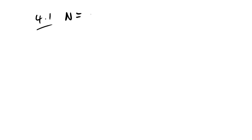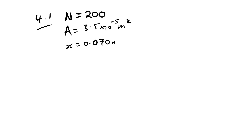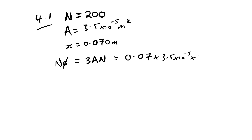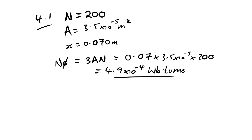Question 4.1: we have a search coil next to an electromagnet. N = 200 turns, cross-sectional area = 3.5 × 10⁻⁵ m². The coil is placed at x = 0.07 m. Calculate the flux linkage. NΦ = BAN. Reading B ≈ 0.07 T off the graph, NΦ = 0.07 × 3.5 × 10⁻⁵ × 200 = 4.9 × 10⁻⁴ Wb-turns.